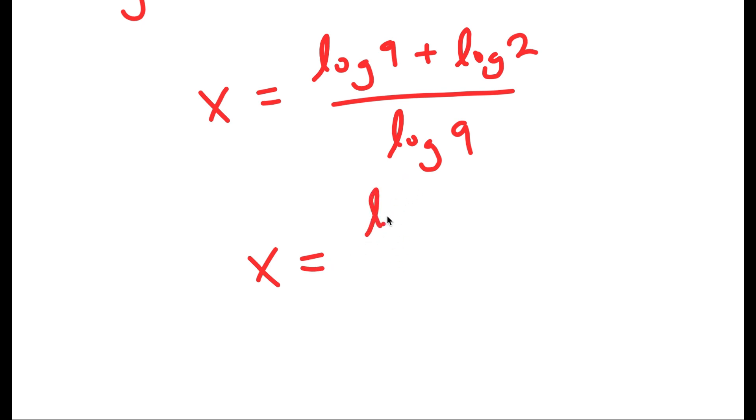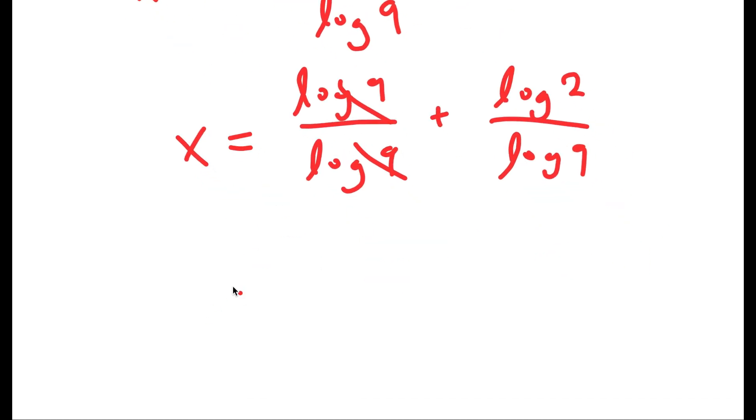And this is the same thing as log 9 over log 9 plus log 2 over log 9. And log 9 and log 9 cancel out, so I get x is equal to 1 plus log 2 over log 9.